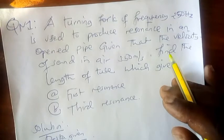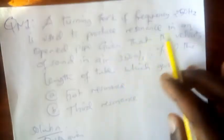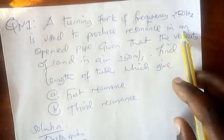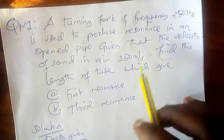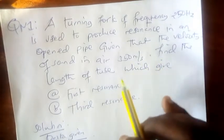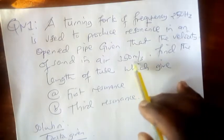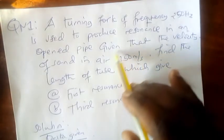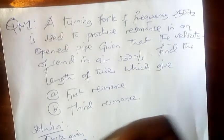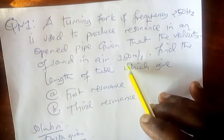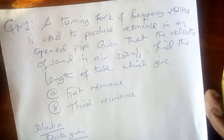The tuning fork vibrates at a frequency of 250 Hz. This frequency is used to generate sound within the tube. The tube is open on both sides. When the sound enters the tube and exits the other end, it meets the open air. The sound speed after entering the pipe and exiting is 350 meters per second. Find the length.